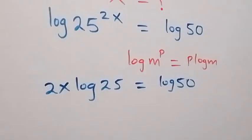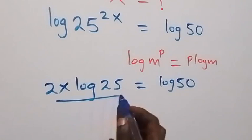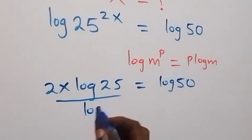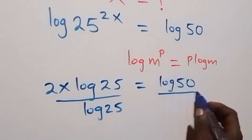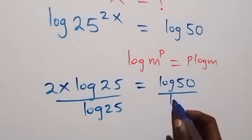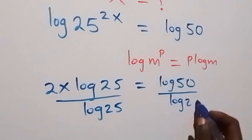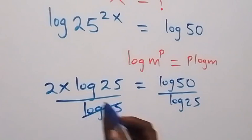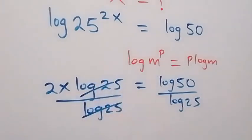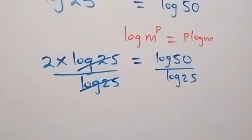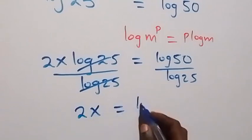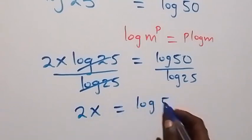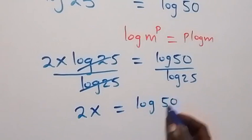We can divide both sides by log 25 — divide this side by log 25 as well. Log 25 cancels on the left, and we are left with 2x which is equal to log 50 over log 25.